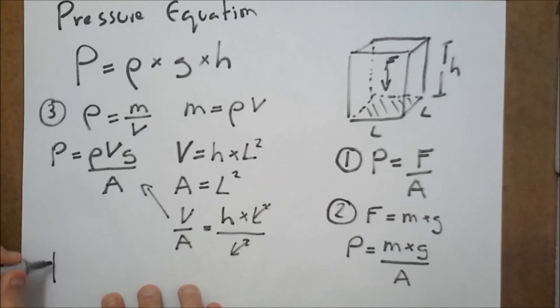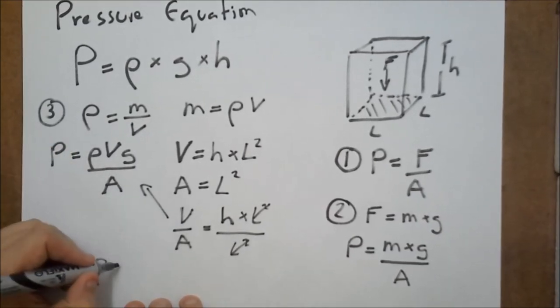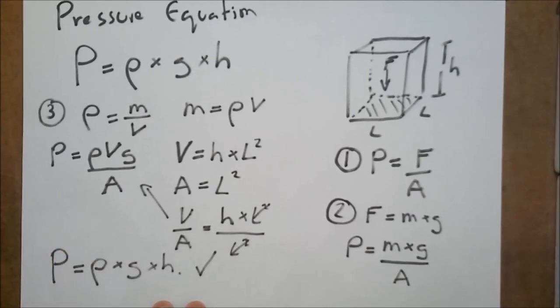And then finally, by doing that, we find pressure equals rho times by g times by h. We made it.